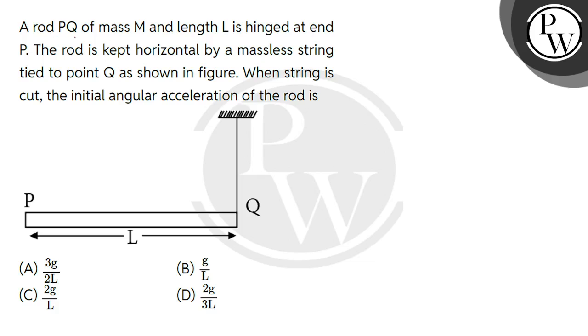Hello, let's read the question. A rod PQ of mass M and length L is hinged at end P. The rod is kept horizontal by a massless string tied to point Q as shown in figure. When string is cut, the initial angular acceleration of the rod is.